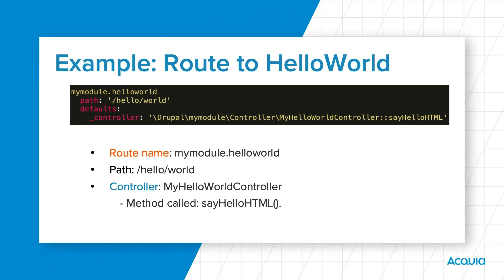Let's look at a route to the Hello World controller we created earlier. In Drupal module development, routes are defined using a language called YAML — simply a text format used for defining configuration. The first line is the route name; in this case, MyModule.HelloWorld. Route names must be unique per application, so it's best practice to begin each route with the module name. The next piece is the path, defined here as slash hello slash world. The path is critical because the route that most specifically matches is the route that gets executed.